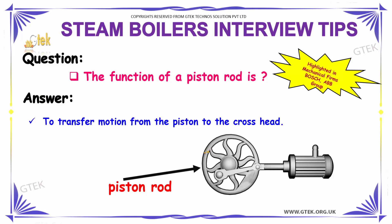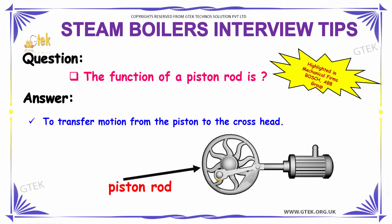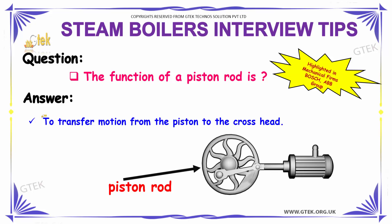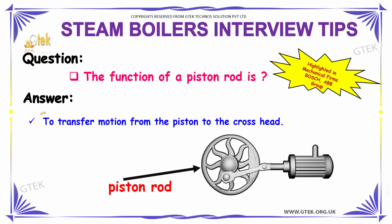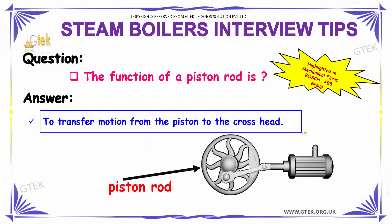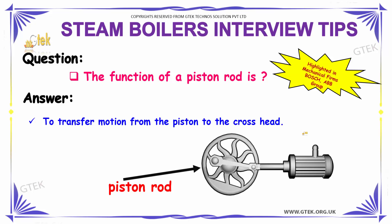The function of a piston rod — with a sharp and crisp answer — the main function of a piston rod is to transfer motion from the piston to the crosshead.